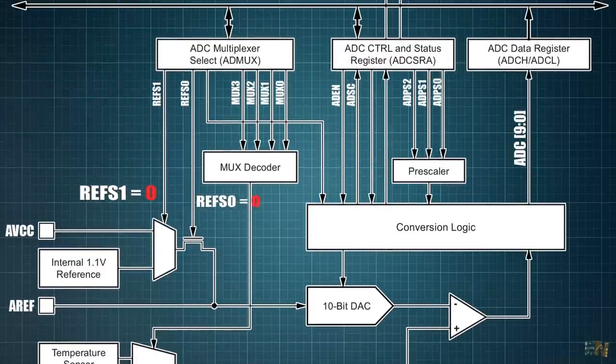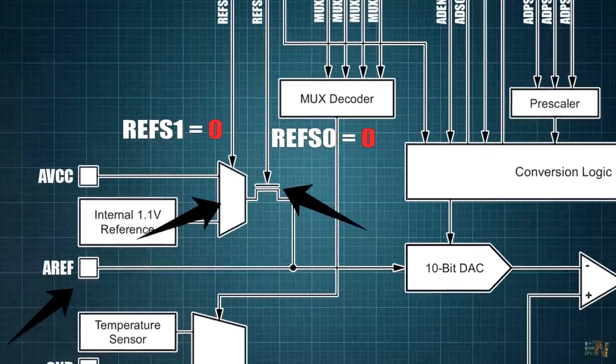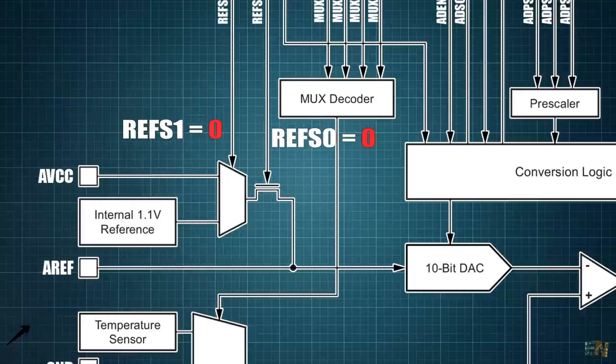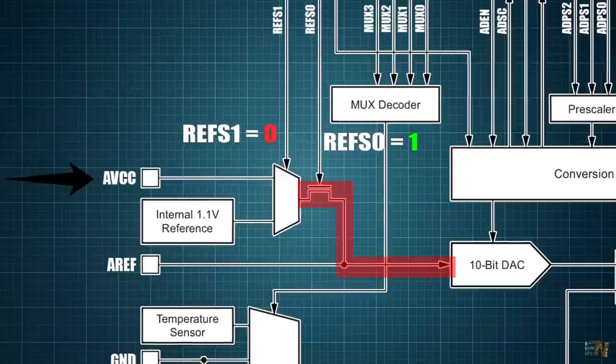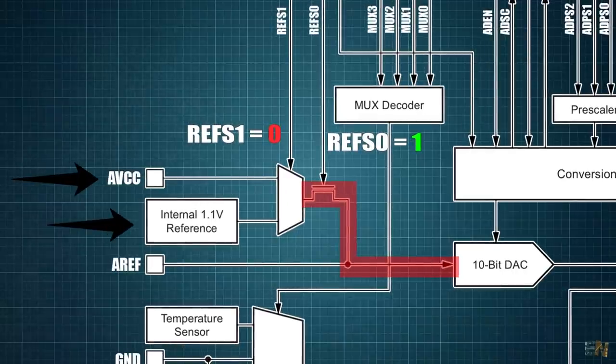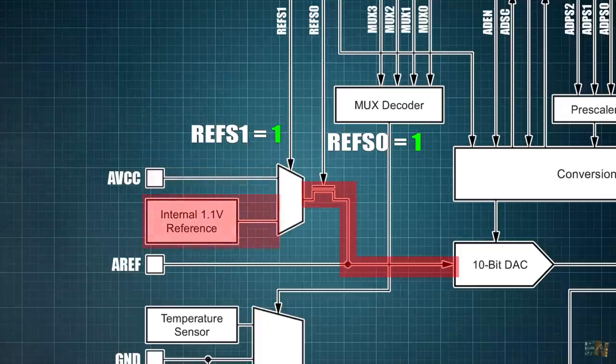If both these bits are 0, that means that these MUX and these FED are disabled so the reference would be external from the AREF pin. If the REFS0 is a 1, then we can select between the VCC and internal reference with REFS1 bit. If the REFS1 is a 0, then the reference is VCC. If this bit is a 1, then the reference would be internal 1.1V.